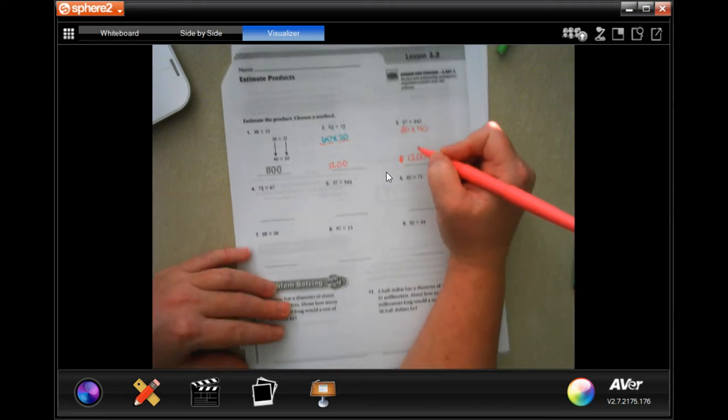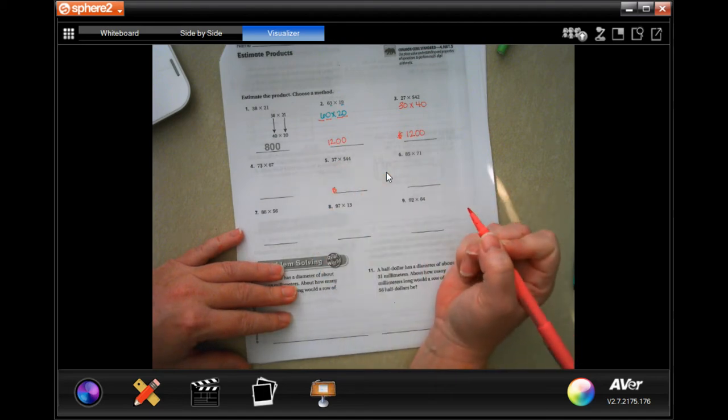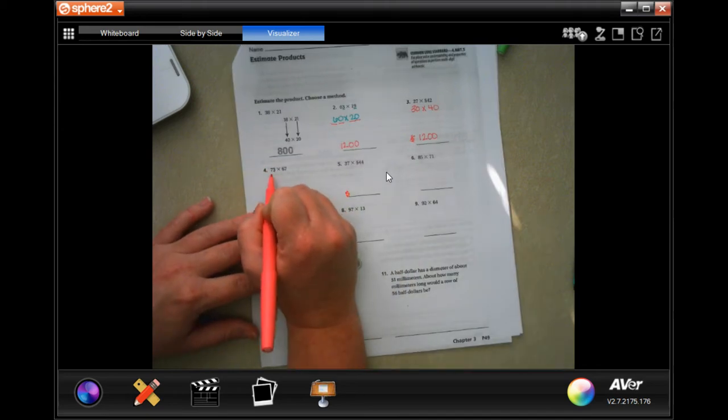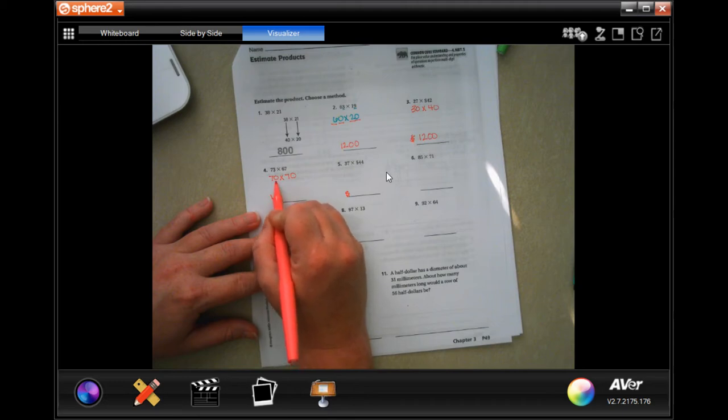Make sure you have a dollar sign. It has a dollar sign. So here on number five, I'm going to put a dollar sign. So 73 will round to 70, 67 will round to 70. So now seven times seven is 49. I'm going to add in those two zeros. Done.